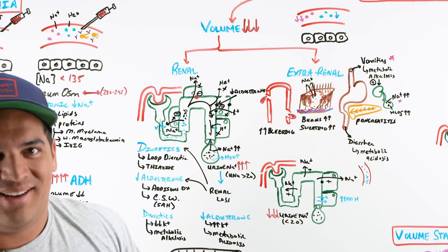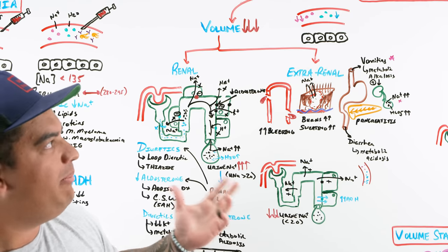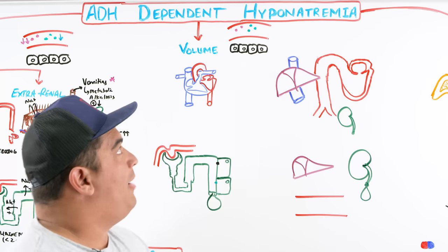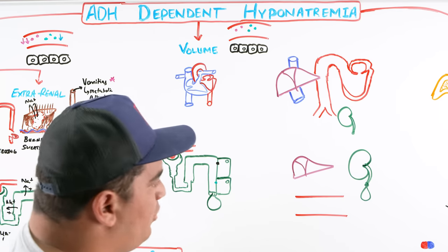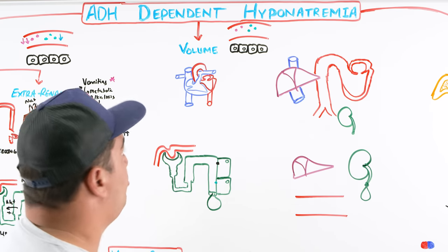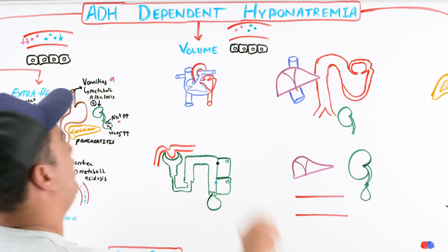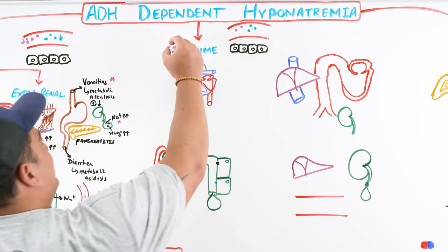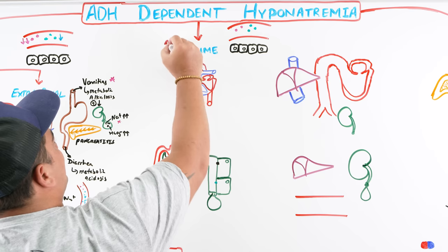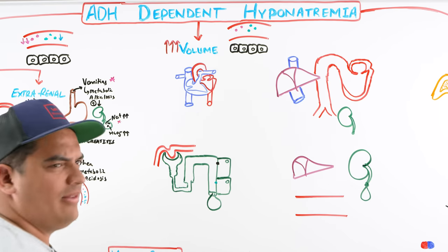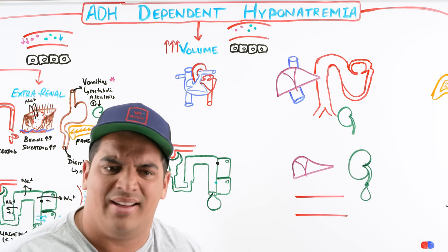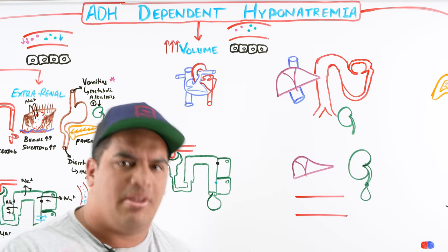That covers the volume-down problem. Now we move to the next situation: what if the patient is volume up? This may seem odd — if volume is high, why would ADH still be on? We'll discuss that next.